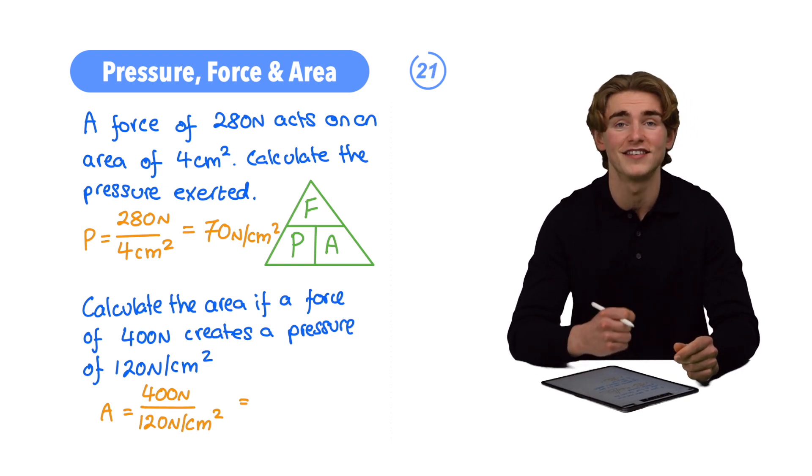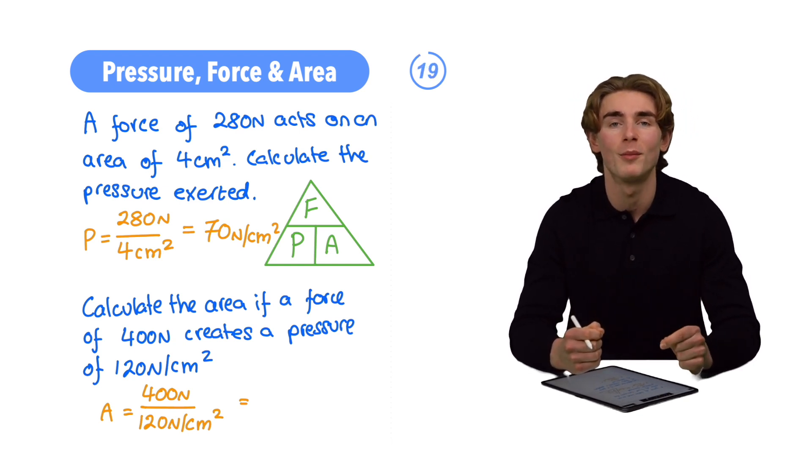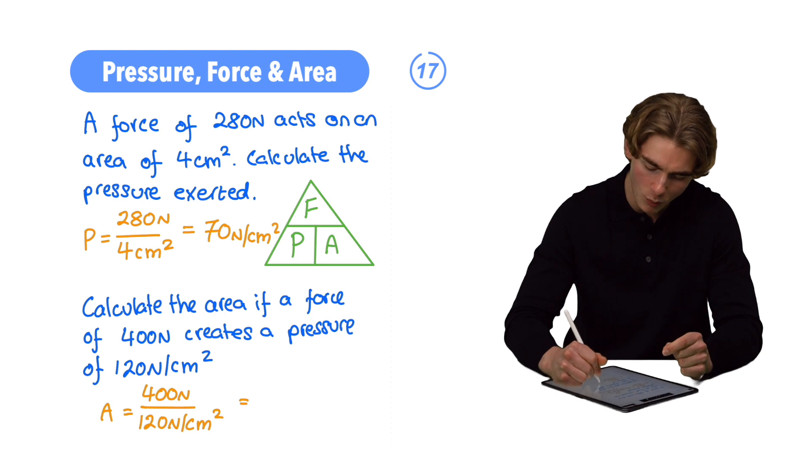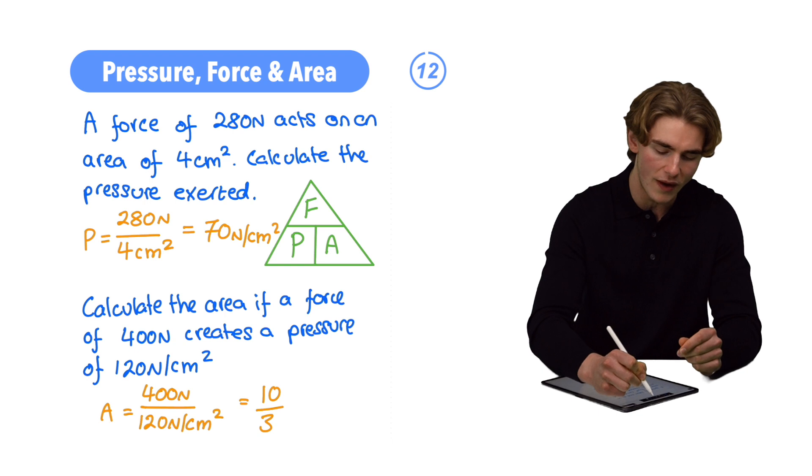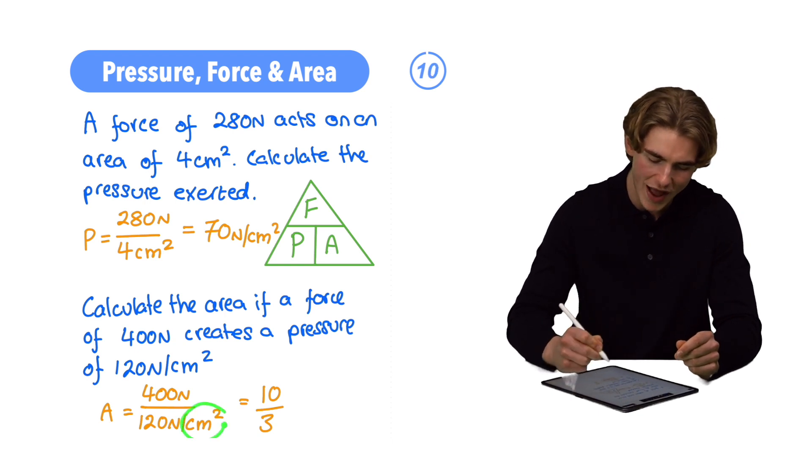but we can simplify this fraction by dividing top and bottom both by the common factor of 40. We end up with 10 on the top and 3 on the bottom. What's our unit going to be for our area? It's going to be centimeters squared.